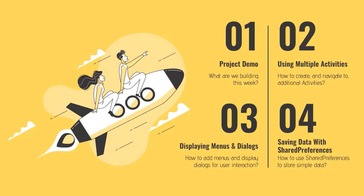Just to give a quick overview, we'll start with a project demo showing what we will build this week. Then we'll jump into using multiple activities — how to create and navigate additional activities within our app. Then we'll explore menus and dialogues and see how to create and show each of those element types on screen. Finally, we'll wrap things up by exploring shared preferences and how to save and retrieve simple key-value data. At the end, we'll walk through the coding assignment.